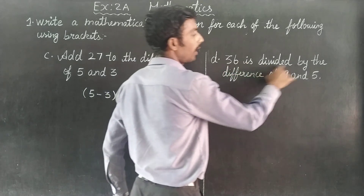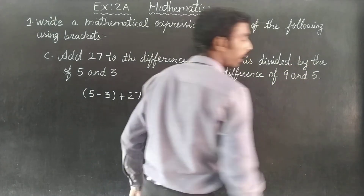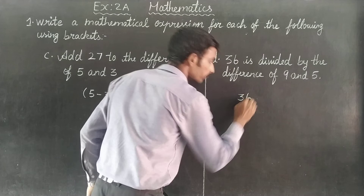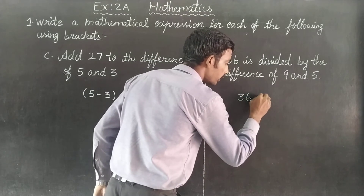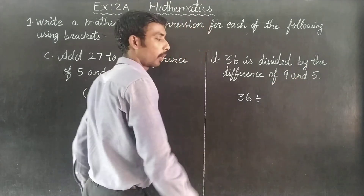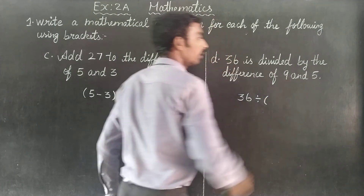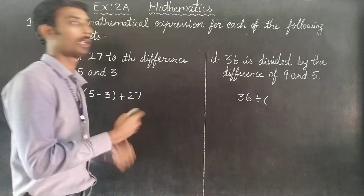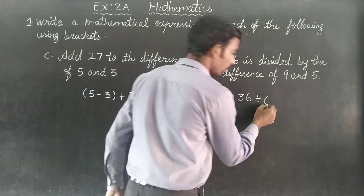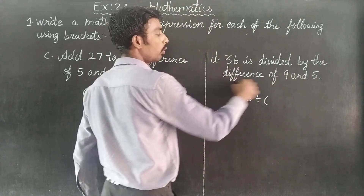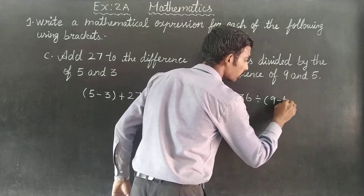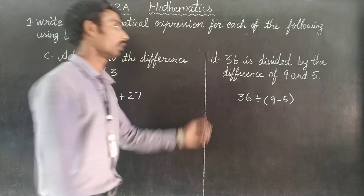Next, these are important. 36 is divided by the difference of 9 and 5. 36 is divided — the division symbol. By the difference of 9 and 5. We have 2 numbers: 9 and 5. We have a division operation and we have a bracket. Difference is division. Where is the difference? 9 and 5.